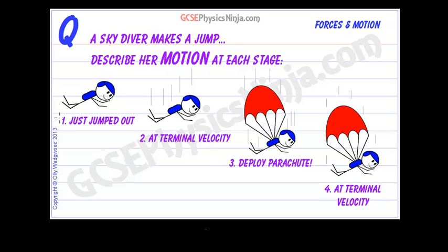When this skydiver has just jumped out of the helicopter, there's no immediate air resistance and all they have is their weight force which is acting downwards. What we have to do here is describe the motion of this skydiver at each stage of her jump.